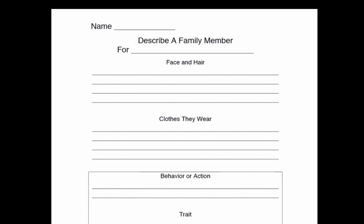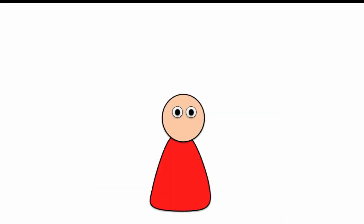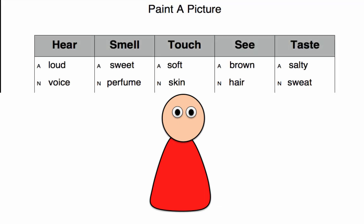We want to do a better job describing the characters in our stories. Describing a person is a lot like describing a place and a thing. We see what they look like — he has brown hair. We hear his loud voice. We feel the soft skin on her arm. We smell her sweet perfume. We can even taste if we lick the salty sweat on his arm. Yuck!